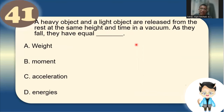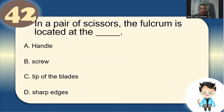Number 41: A heavy object and a light object are released from rest at the same height in a vacuum. As they fall, they have equal acceleration — same acceleration regardless of mass in a vacuum.